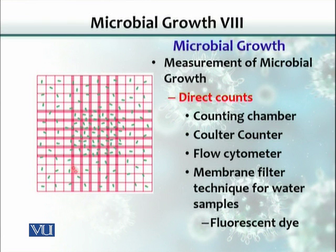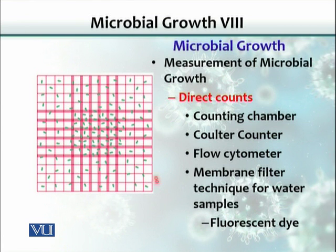One method is the use of a counting chamber — a hemocytometer that is normally used in a clinical lab for estimating the number of RBCs in a blood sample. It's the same instrument we can use for counting the number of bacteria. The bacteria are diluted and then placed into this specific chamber, which has a specific volume, and then we can calculate the number of cells per volume. There is also an electronic way of counting cells, and that is called a Coulter counter.